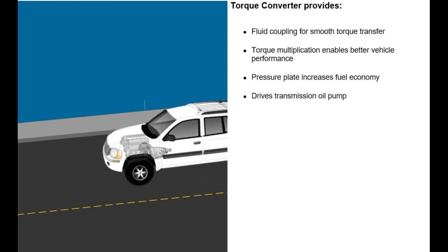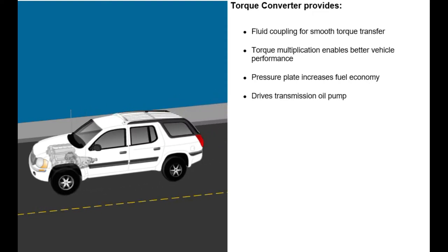The torque converter provides a fluid coupling for smooth transfer of torque between the engine and transmission. It produces torque multiplication that enables the vehicle to achieve better performance while providing a mechanical link between the engine and the transmission. The pressure plate eliminates the fluid coupling and increases fuel economy at higher vehicle speeds with the torque converter clutch (TCC) applied. Finally, the torque converter drives the transmission oil pump in order to generate transmission operating pressure.